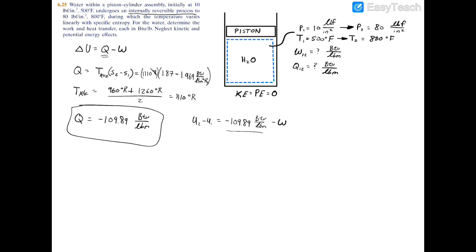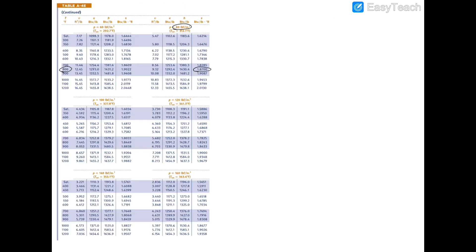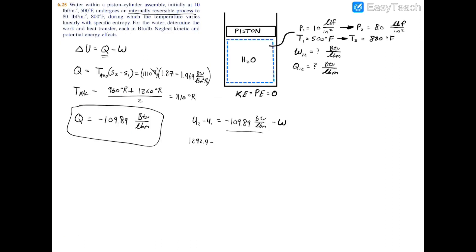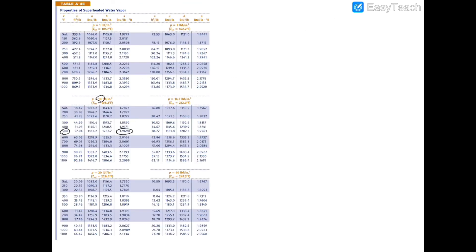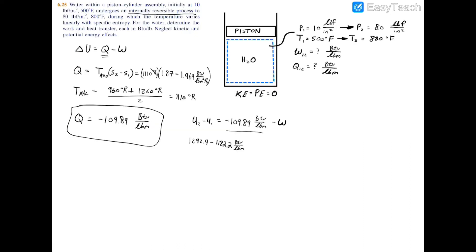We'll find u2 and u1 both from the superheated tables. To find u2, we go to Table A4E, 800 Fahrenheit and 80 psi, and we have a specific internal energy of 1292.4 BTU per pound. To find u1 at 500 degrees Fahrenheit and 10 psi, Table A4E gives us a specific internal energy of 1182.2 BTU per pound.